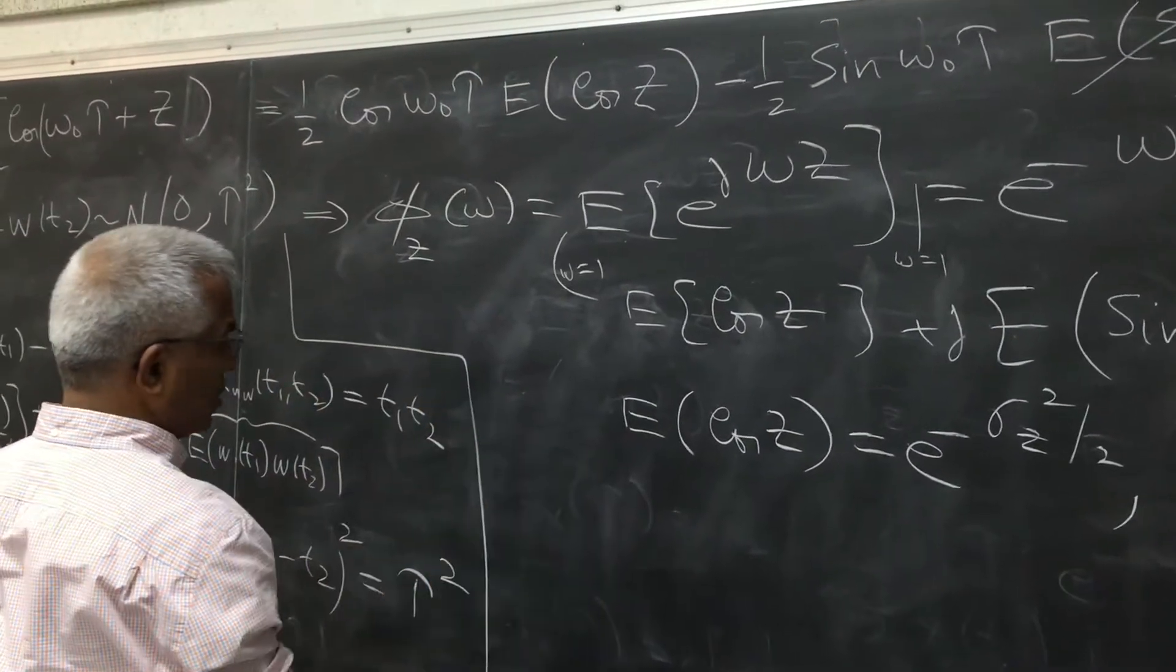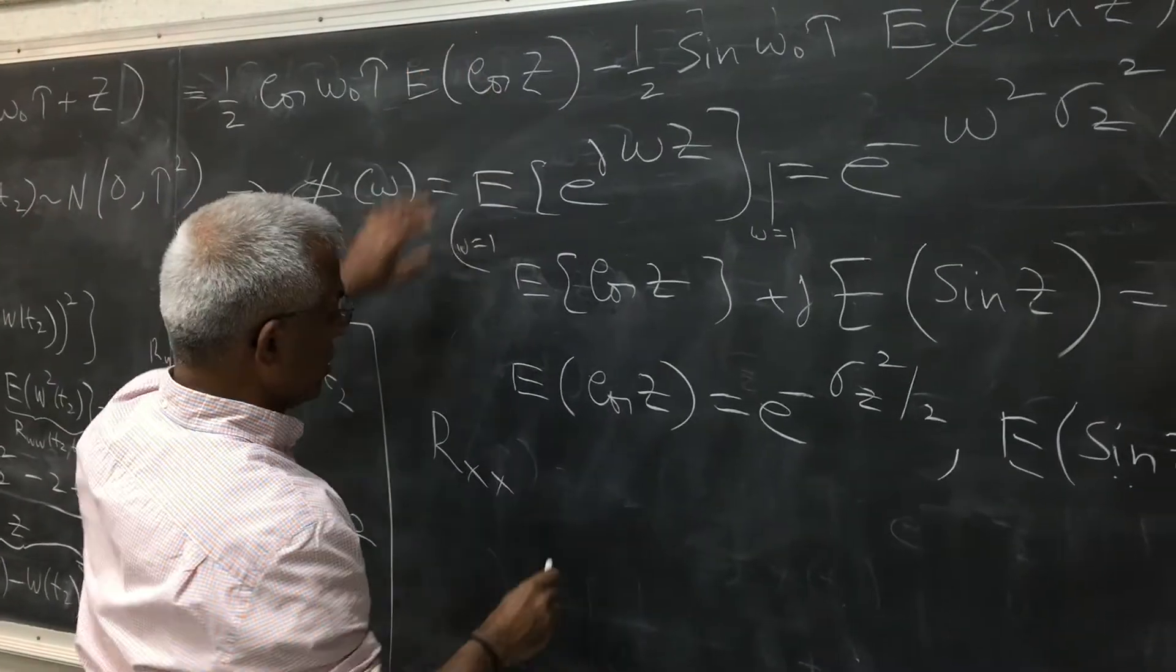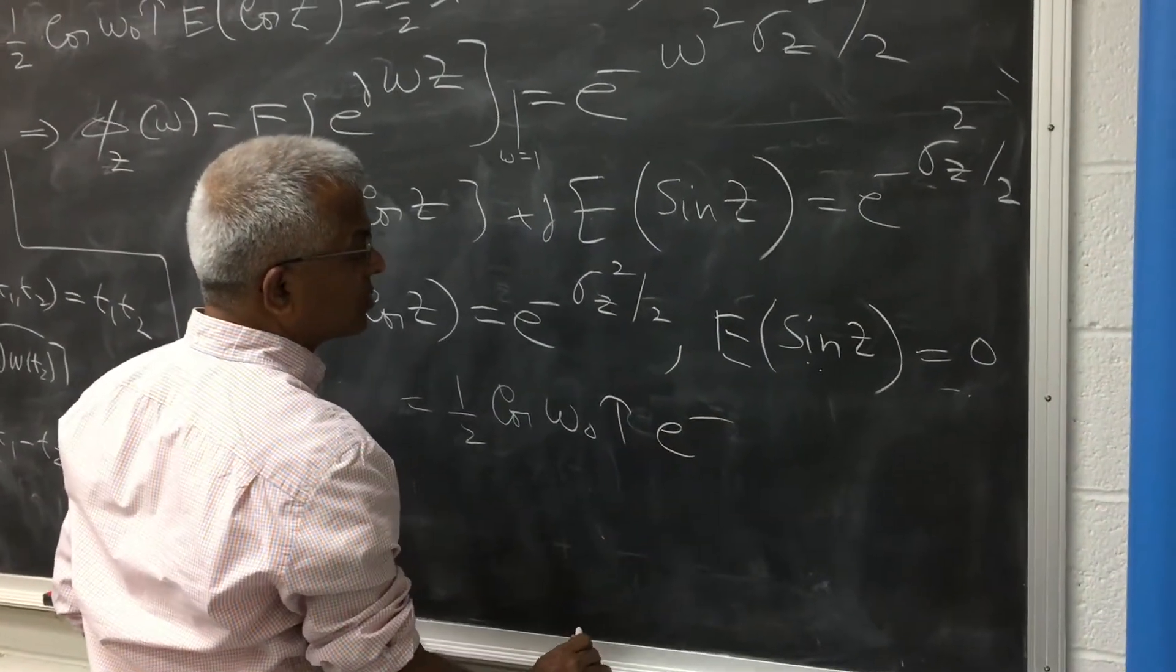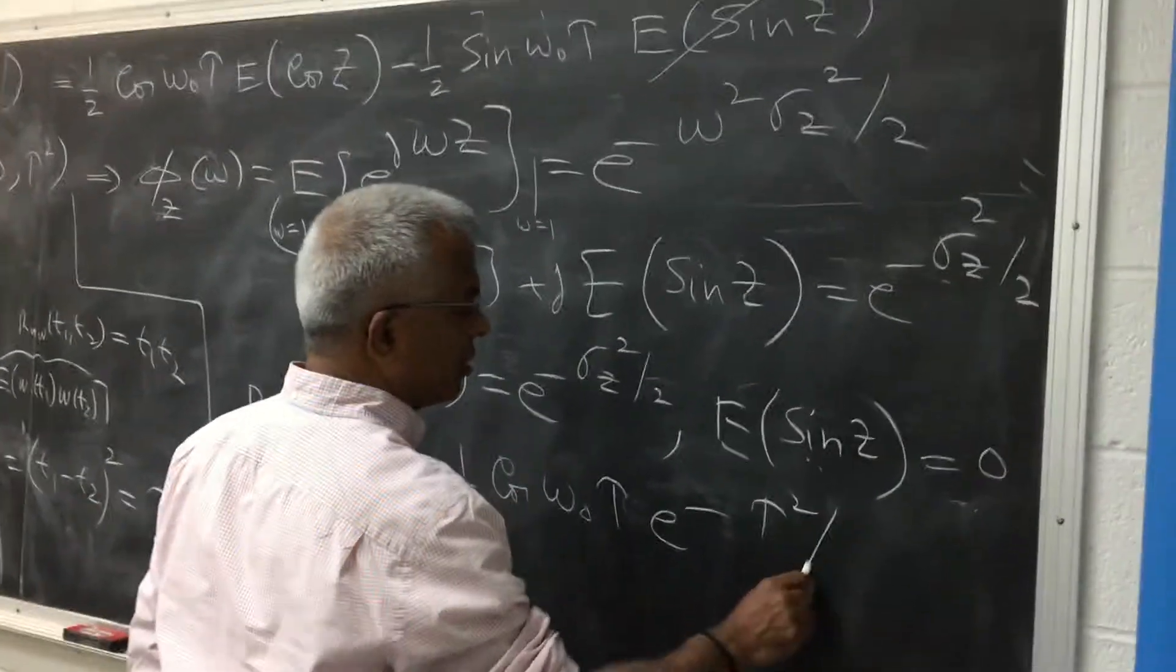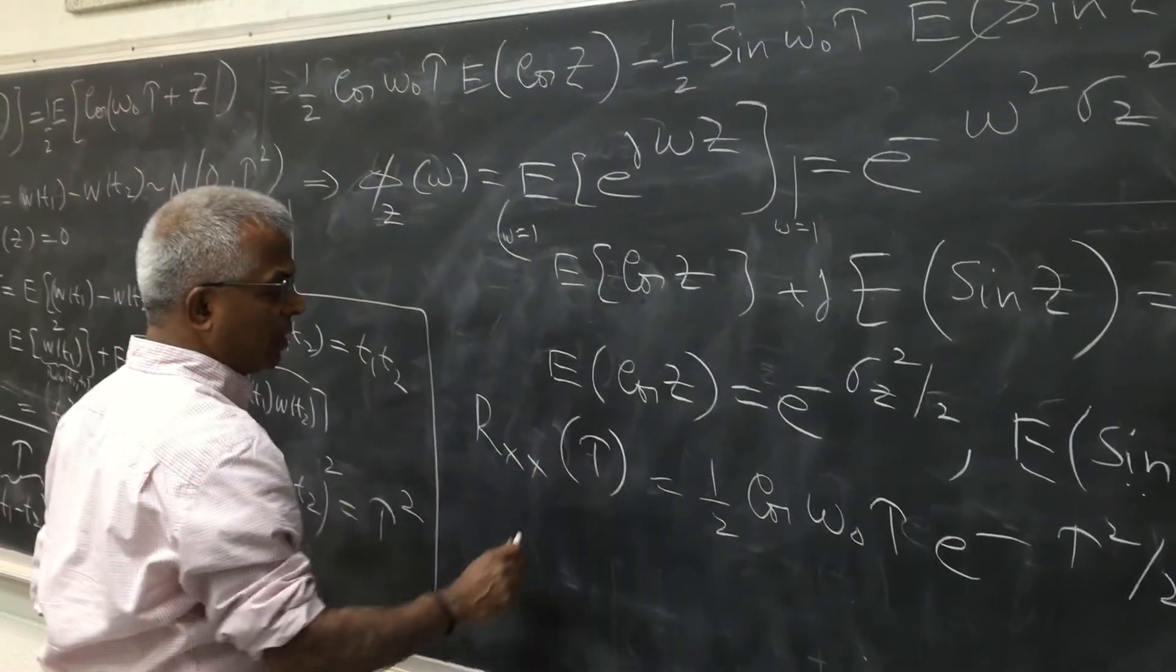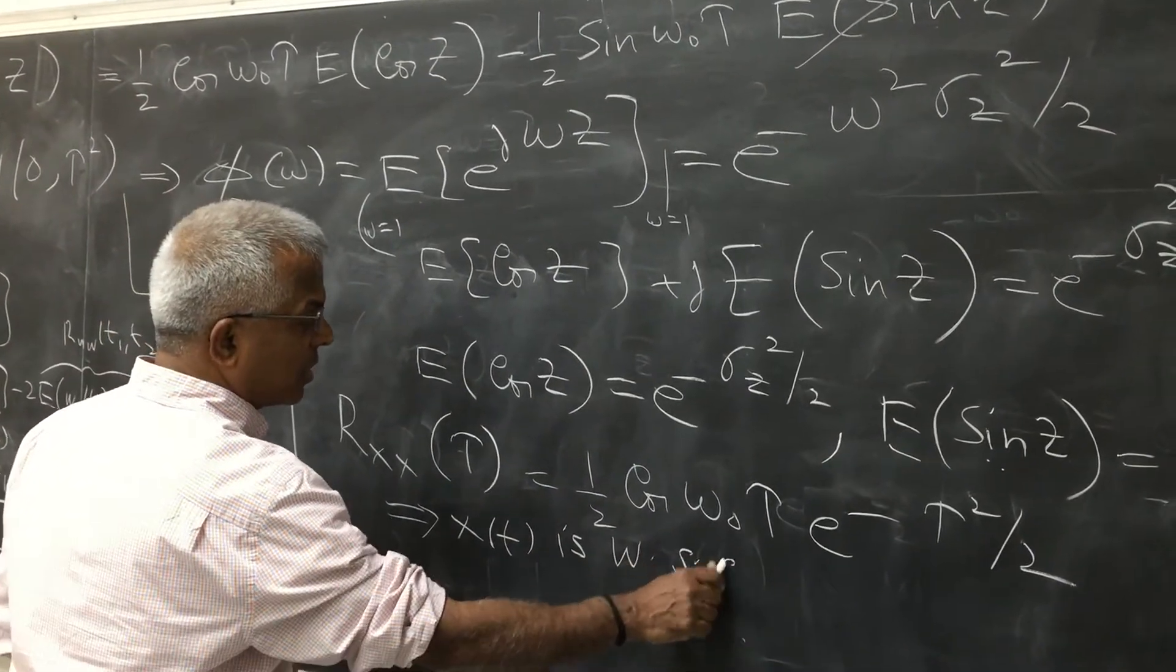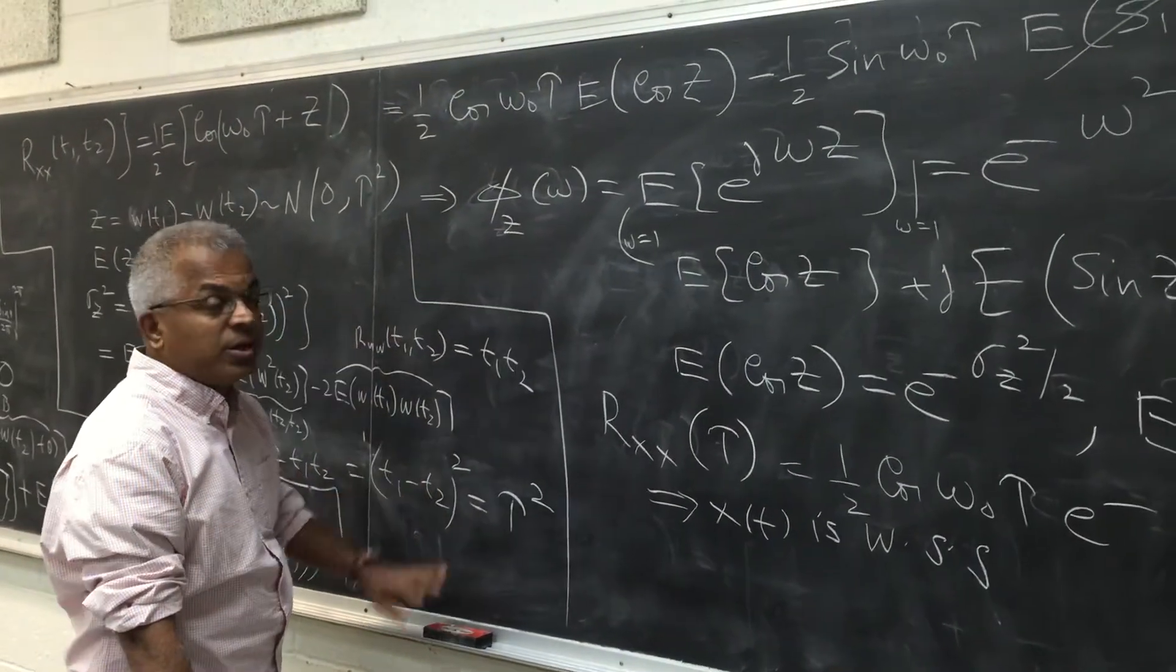And we get from here rxx of tau. So notice that the right side is now half cos omega naught tau e raised to minus sigma z squared which we computed here as tau squared. So this is simply tau squared by 2. Also notice that the right side is only a function of tau, and hence the left side is also a function of tau. So we conclude that x(t) is in fact wide sense stationary. So phase modulation has induced stationarity at the output.